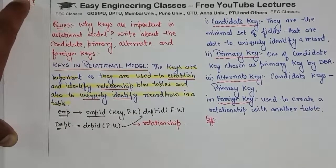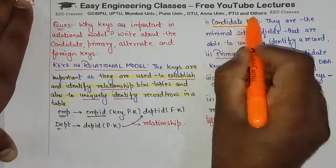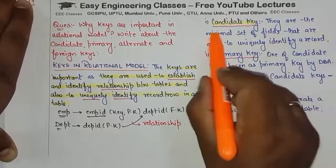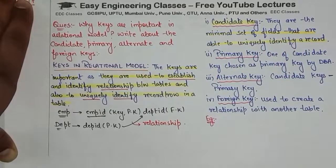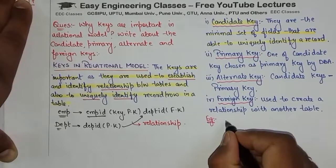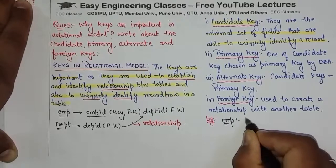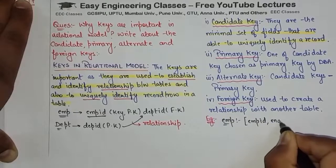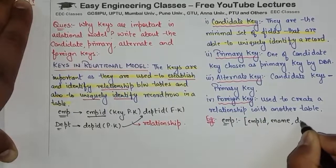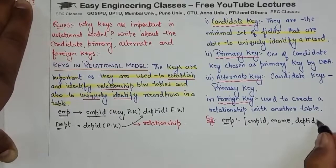Ab dekhte hain candidate key kya hoti hai, primary key kya hoti hai, alternate aur foreign key kya hoti hai. Candidate keys are the minimal set of fields that are able to uniquely identify a record. Simple example lete hain — employee table mein attributes hain: employee ID, employee name, department ID, aur let us say mobile number.